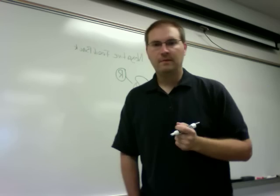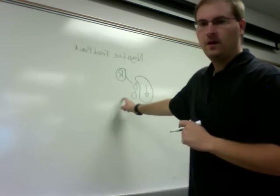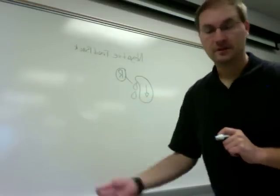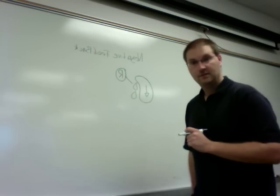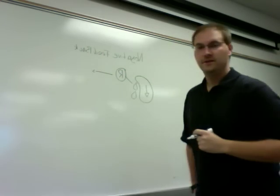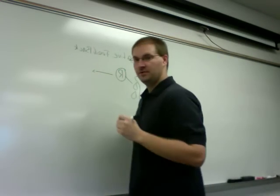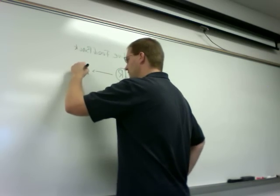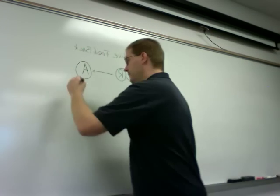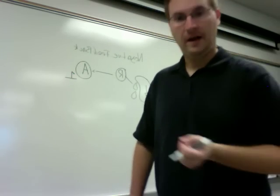Does renin by itself do much of anything? Not really. It tells the body, though, hey, something's going on — the kidney's crying, it's not happy. The renin lets the body know something's going on. In response to the kidney being unhappy, the body goes, we need to do something about this. And what it does is it secretes angiotensin — I'm going to put a big A here for angiotensin — angiotensin 1. So I'm going to put a big A1 here. Angiotensin 1 doesn't do a whole lot by itself.